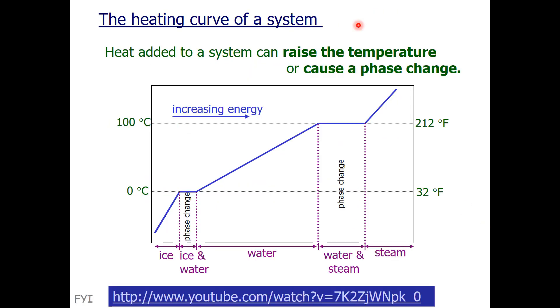So that brings up the heating curve of a system. When a substance is heated, one of two things can happen. Either the temperature can be raised because the molecules move faster, or a phase change can occur because the molecules move further apart.